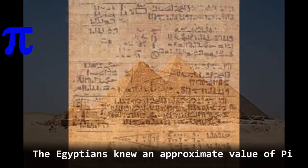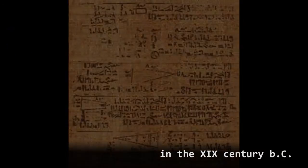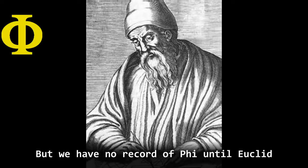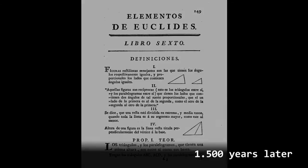Let's compare both numbers. The Egyptians knew an approximate value of Pi in the 19th century before Christ, but we have no record of Phi until Euclid, 1500 years later.